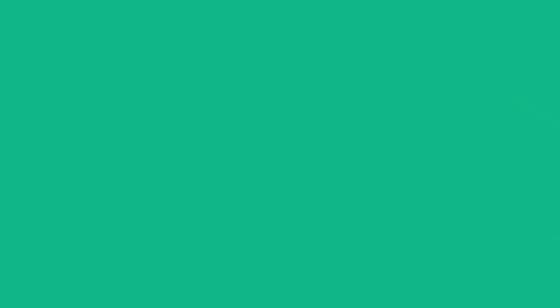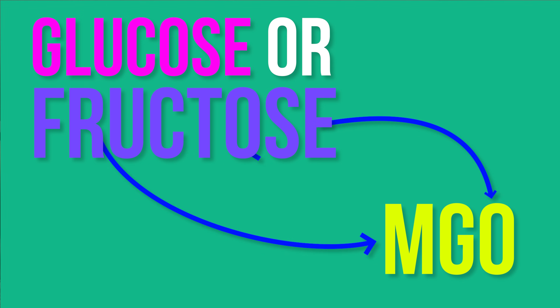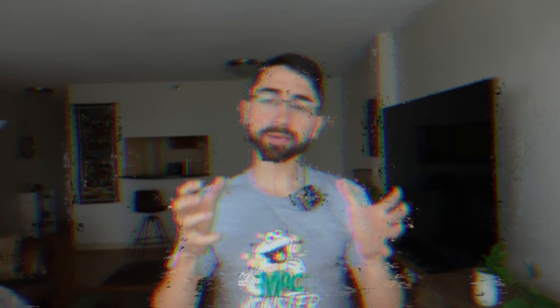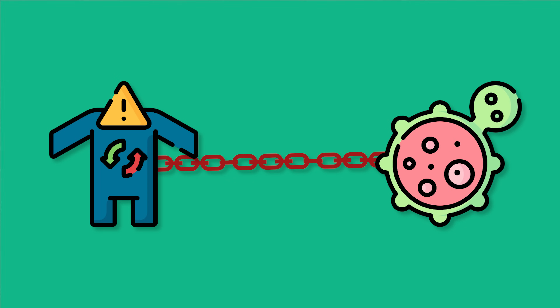So what is methylglyoxal? Methylglyoxal is a byproduct of glucose or fructose metabolism that can covalently attach to DNA, RNA, and proteins, and in the case of proteins, disable their function and cause metabolic derangements. Methylglyoxal is increased in states of metabolic dysfunction like diabetes, thereby creating a link between states of metabolic dysfunction and potentially mutagenesis and cancer.